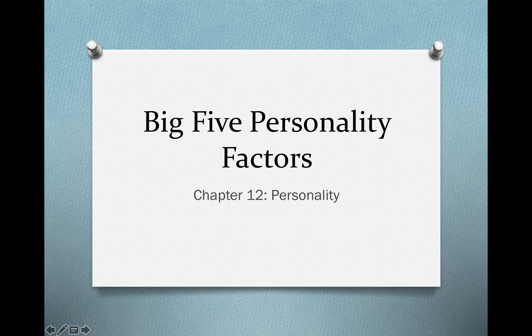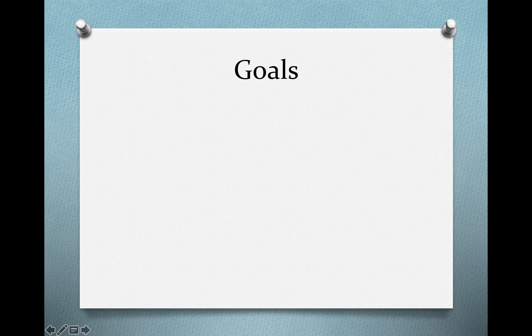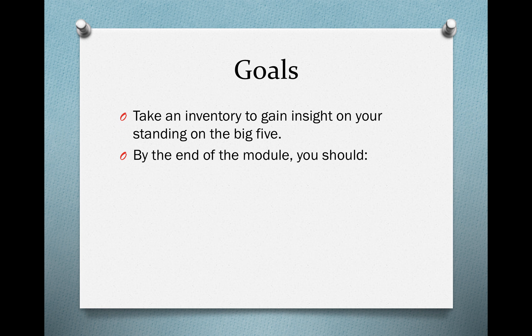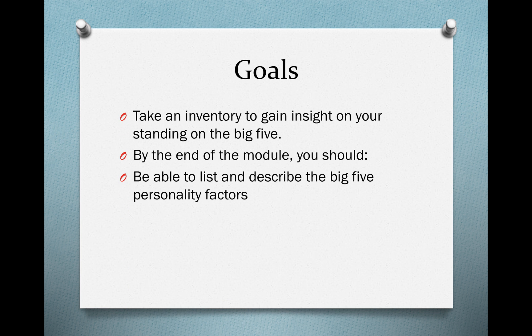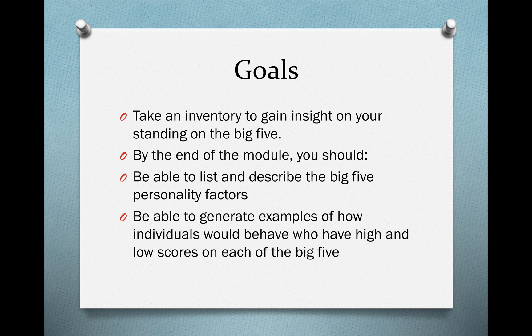This is a module on the Big Five personality factors — trait theory discussed in the more general discussion of personality. By the end of it, you should take an inventory to gain insight into your standing in the Big Five, list and describe the Big Five personality factors, and generate examples of how people would behave with high and low scores on each. I'll ask questions in this module, but you don't have to turn those in unless otherwise instructed.